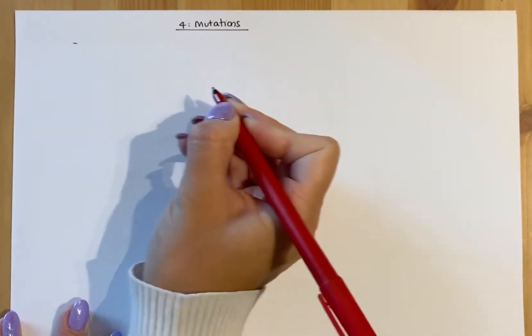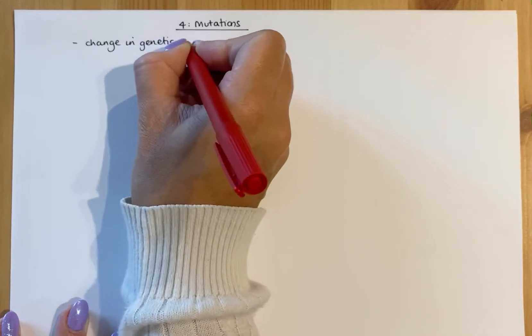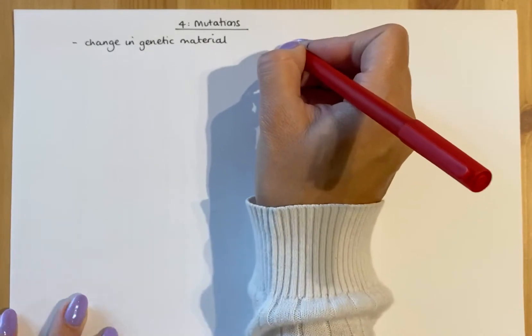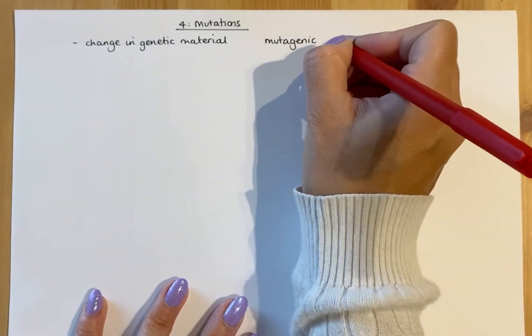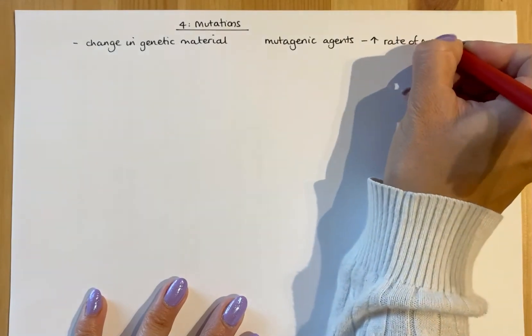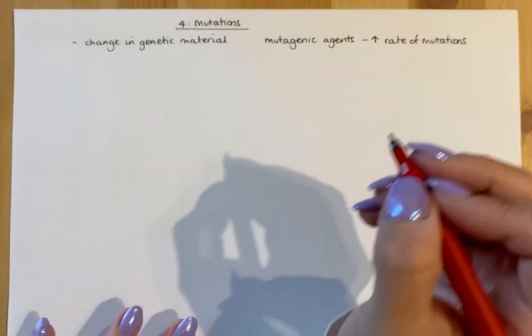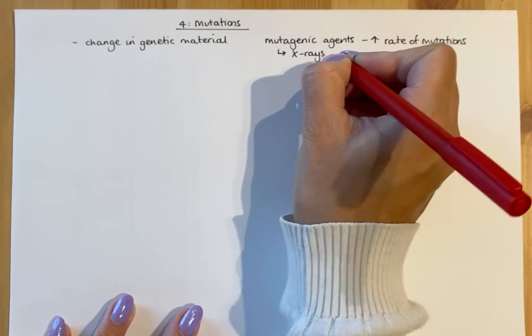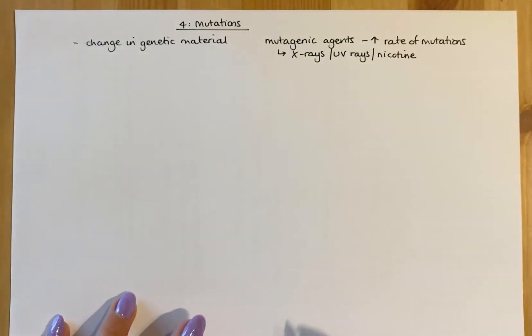This video covers mutations, the fourth section of the first unit of Higher Human Biology. It's a short topic but can be tricky with wording. It relies on National 5 content: a mutation is a change in genetic material, either in the bases within genes or in chromosomes. Mutagenic agents increase the rate of mutations — things like X-rays, UV rays, nicotine, mustard gas, and gamma rays.